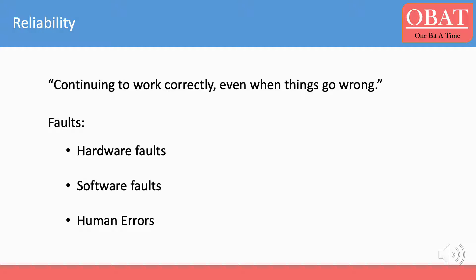Let's talk about reliability. We generally want things or software to perform as expected. If they do so, it means they are working correctly. But we want software to work correctly even when things go wrong. That's called reliability.